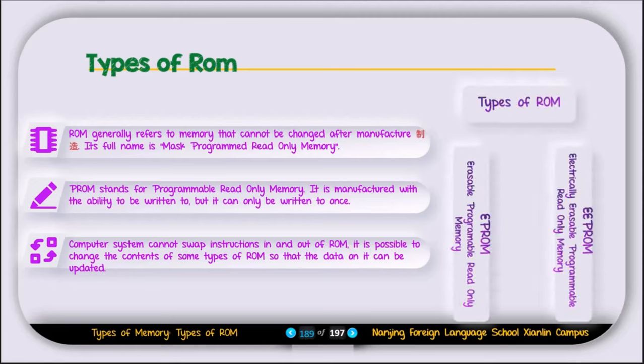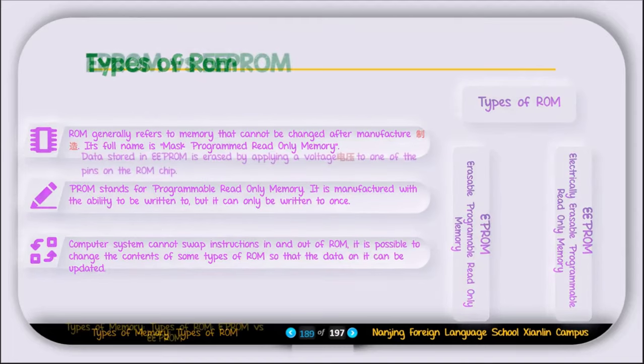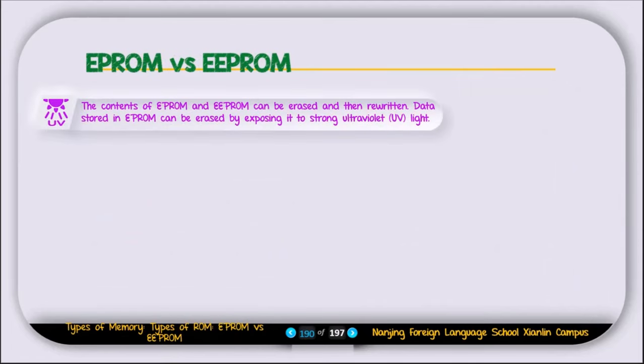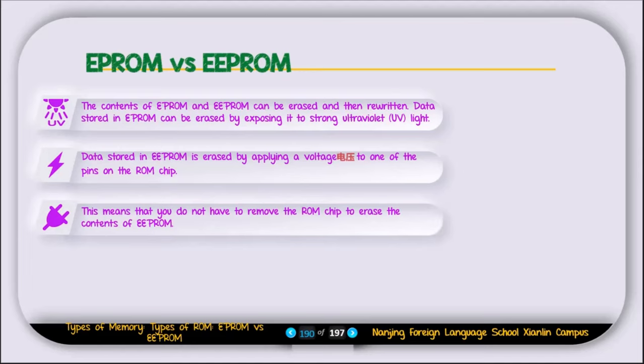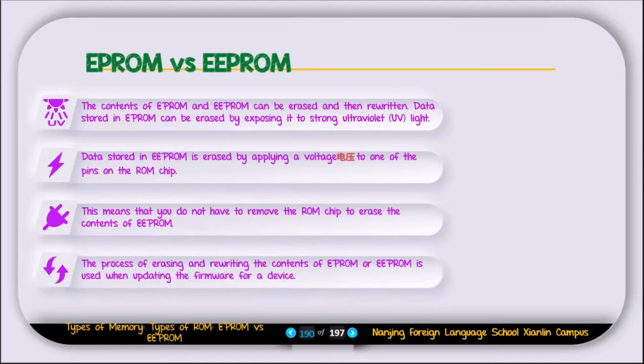Now let's discuss the types of ROMs. There are two types: EPROM, which is erasable programmable read-only memory, and EEPROM, which is electrically erasable programmable read-only memory. The content of EPROM and EEPROM can be erased and then rewritten. Data stored in EPROM can be erased by exposing it to strong ultraviolet or UV light. Data stored on EEPROM is erased by applying a voltage to one of the pins on the ROM chip. This means that you don't have to remove the ROM chip to erase the content of EEPROM. The process of erasing and rewriting the content of EPROM and EEPROM is used when updating the firmware of a device.